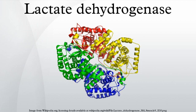Functional lactate dehydrogenase are homo- or heterotetramers composed of M and H protein subunits encoded by the LDHA and LDHB genes, respectively. LDH1 is found in the heart, LDH2 in the reticuloendothelial system, LDH3 in the lungs, LDH4 in the kidneys, placenta, and pancreas, and LDH5 in the liver and striated muscle.